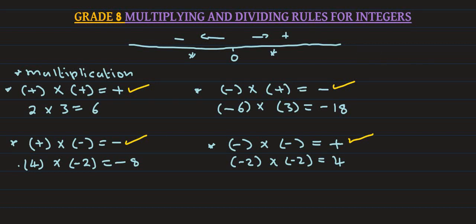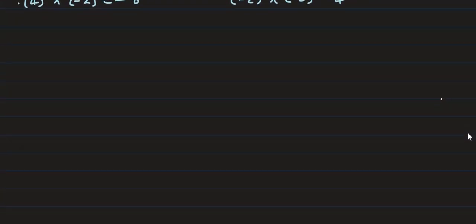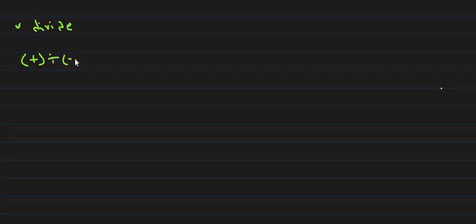We multiply by positive times negative. For division also: when we divide a positive, we divide a positive — for example, 4 divided by 2 equals 2, which is positive.